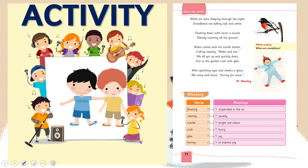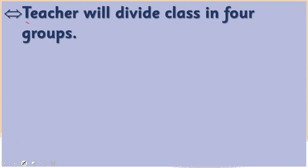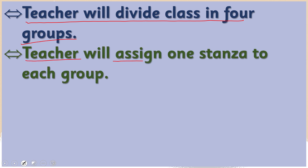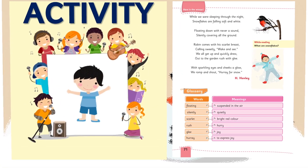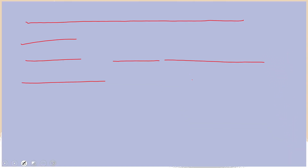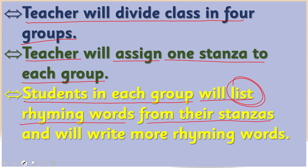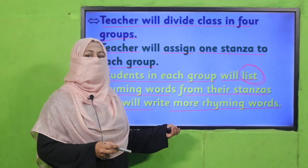All of you open your book on page number 71. The activity is: your teacher will divide the class into four groups. Teacher will assign one sentence to each group — there are different sentences in this poem. Students in each group will make a list of the rhyming words from their sentence, and will also write more rhyming words.